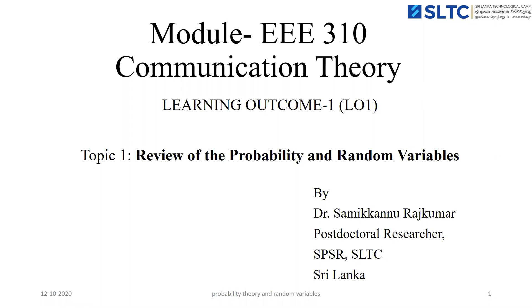Good morning, I am Krajkman, working as a postdoctoral researcher in the School of Postgraduate Studies and Research. This semester, I am going to take the subject Communication Theory module, subject code EE310. The Communication Theory module covers five learning outcomes. This session, we are going to talk about learning outcome one, the first topic: review of probability and random variables.